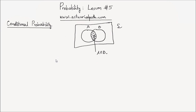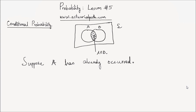Conditional probability quantifies the probability of one event occurring, given the other one has already occurred. Suppose now that A has already occurred. Given that A has already occurred, what is the probability that event B will also occur? That's the notation we use for conditional probability — this denotes the probability of B occurring given that A has occurred.